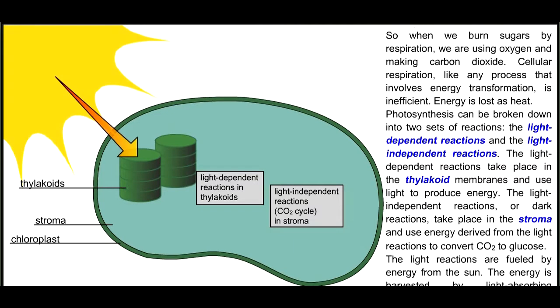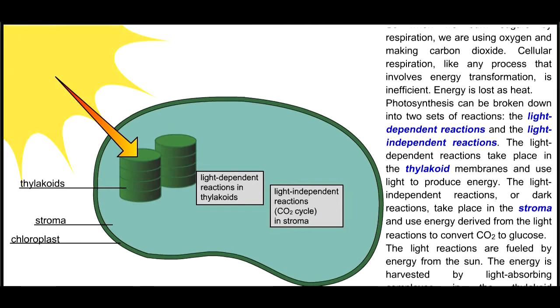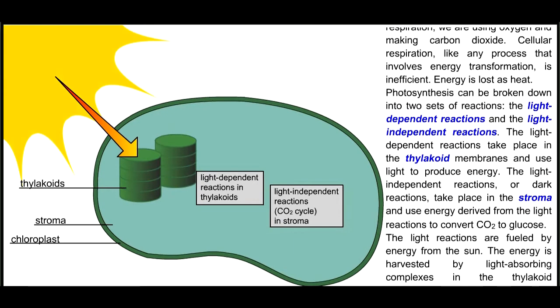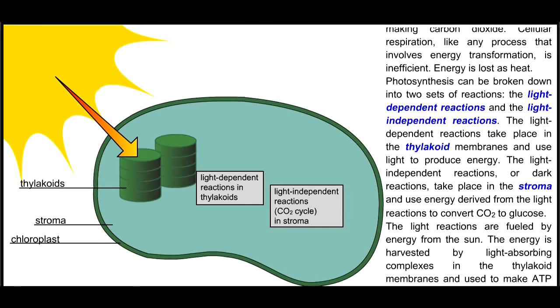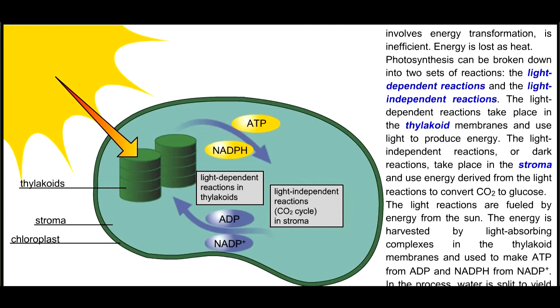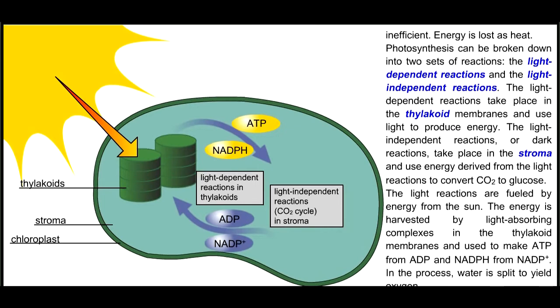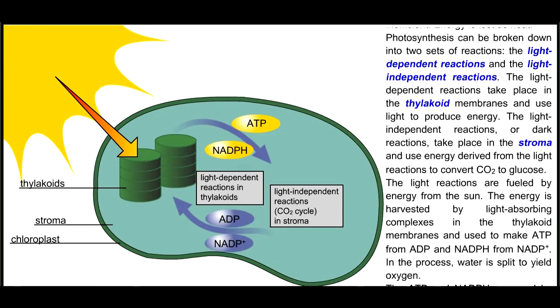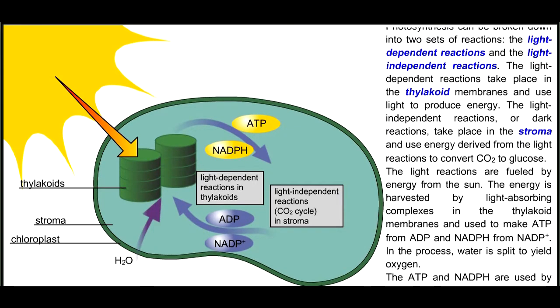The light reactions are fueled by energy from the sun. The energy is harvested by light-absorbing complexes in the thylakoid membranes and used to make ATP from ADP and NADPH from NADP+. In the process, water is split to yield oxygen.